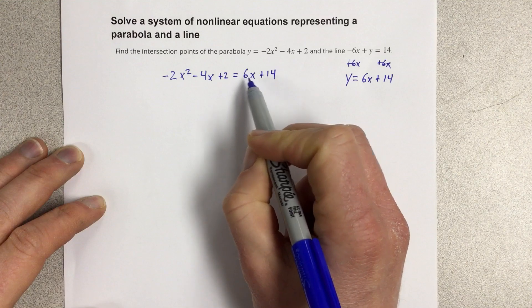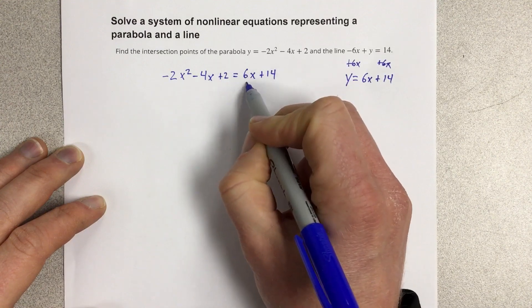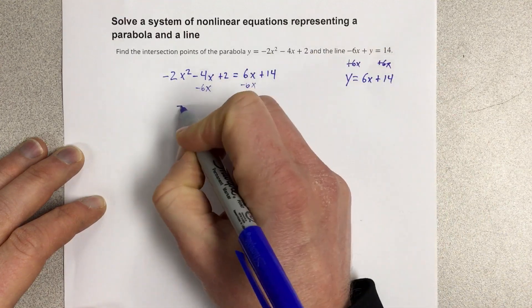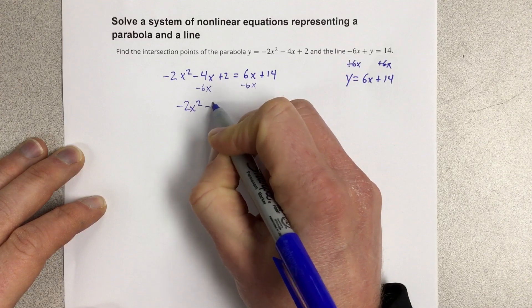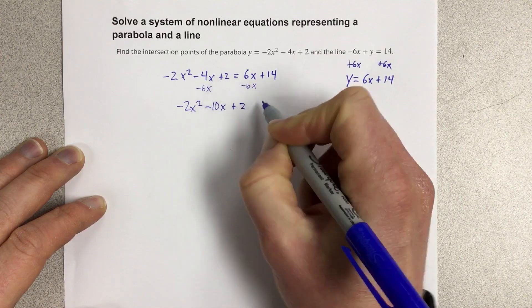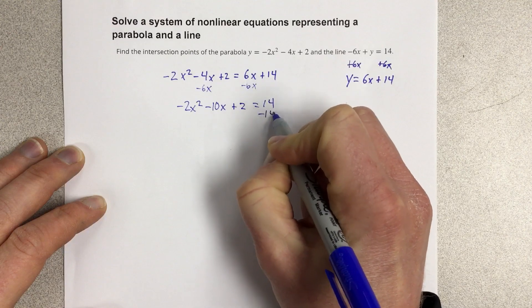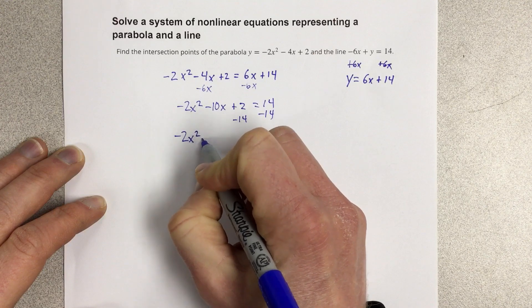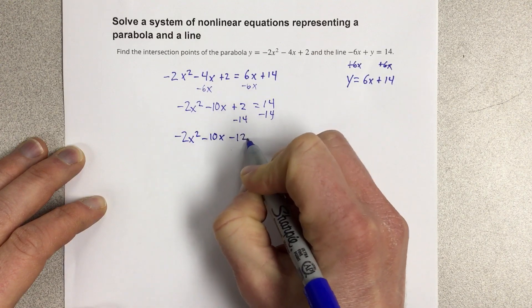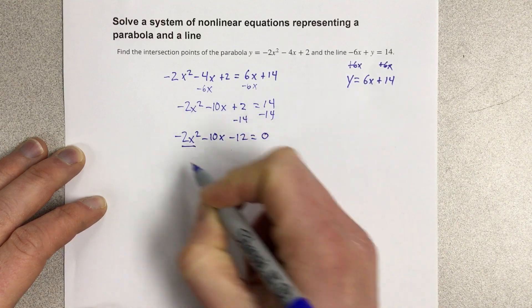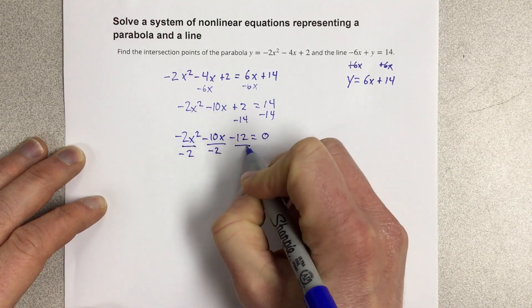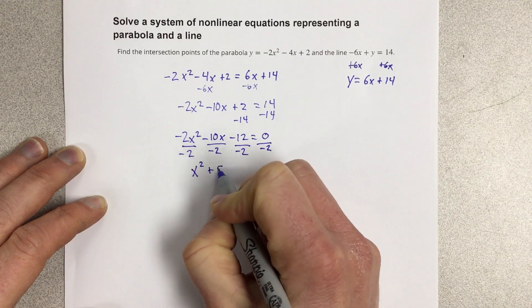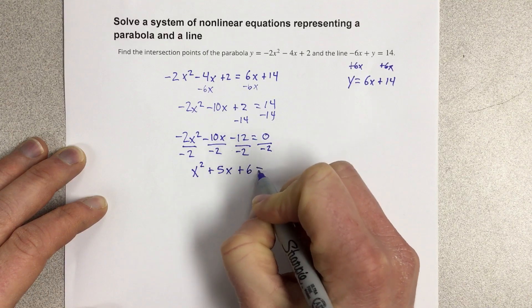Now I just have a standard parabola here. I need to get this equal to 0. So I'm going to subtract 6x on each side. That's negative 2x squared minus 10x plus 2 equals 14. Subtract the 14 over. That would be negative 2x squared minus 10x minus 12 equals 0. I'm going to divide this all by negative 2, and I get x squared plus 5x plus 6 equals 0.